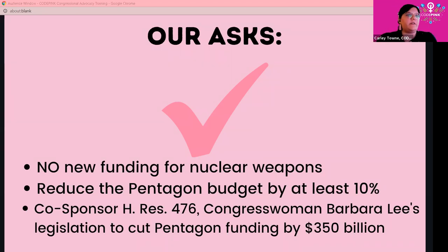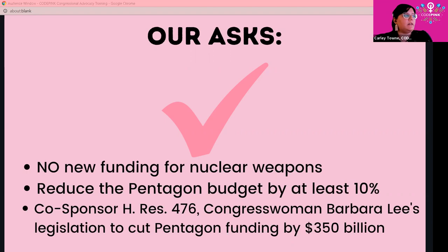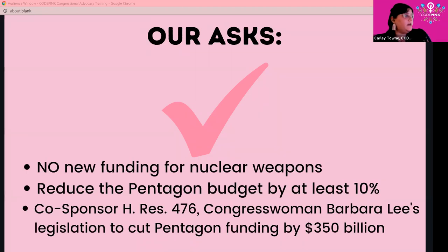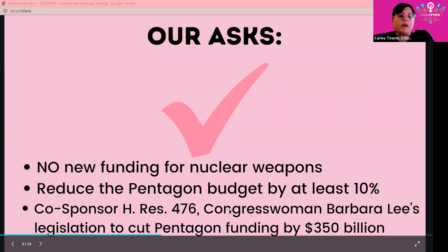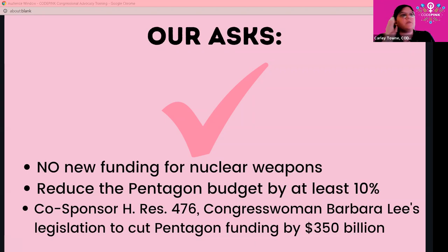Let me summarize our asks very simply. When we're in meetings with our congressional representatives, we want to do three things: no new funding for nuclear weapons — which is currently in the NDAA; reduce the Pentagon budget by at least 10 percent; and co-sponsor House Resolution 476 — Congresswoman Barbara Lee's legislation to cut Pentagon funding by $350 billion. Does this mean your congressperson will agree to all of those things? Not necessarily, but these are the important things we need to be asking.